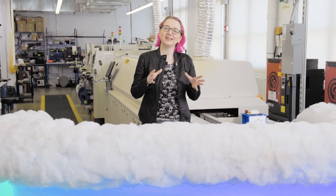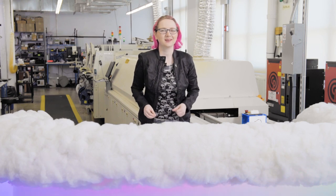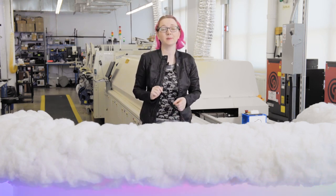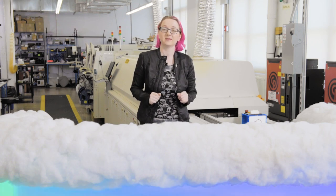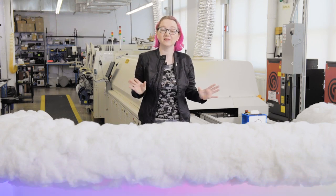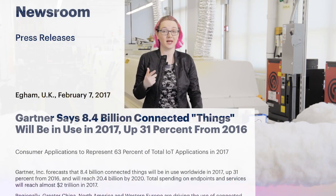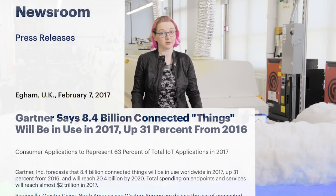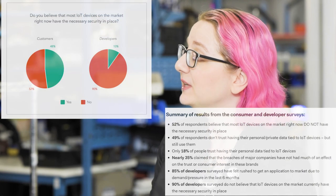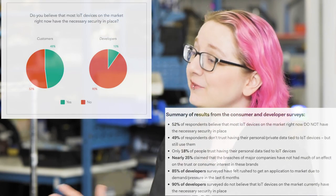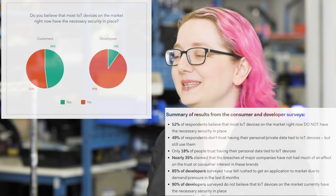The running joke is that the S in IoT stands for security, because it's never there. But safety and security is something you will need to think about at all steps of your design process. There's going to be billions of IoT devices online around the world, many of which will be connected to the Internet, and almost all of them will be unmonitored. A 2015 survey by authentication service provider Auth0 found that 85% of IoT developers admitted to being pressured to get a product to market before adequate security could be implemented.